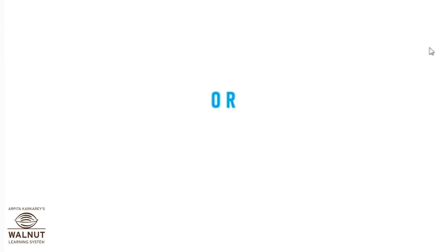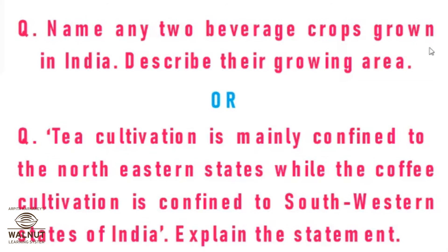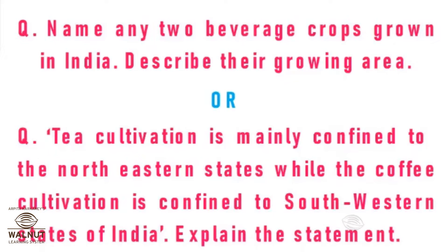Now here are some questions which can be asked in your exam. This is a 10th standard chapter, so these can be asked for board exams. Whatever questions are included in the PPTs are really important — try solving them. The question says: name any two beverage crops grown in India and describe their growing area.